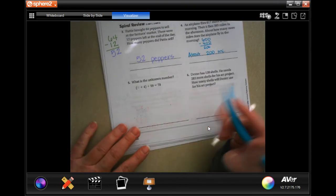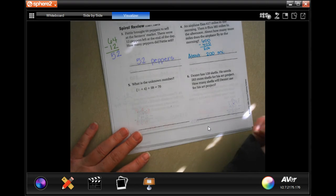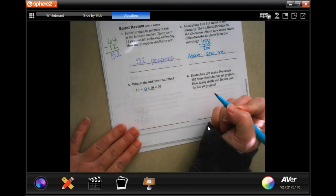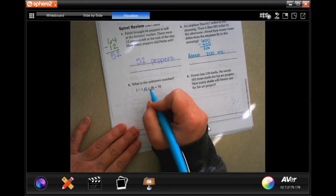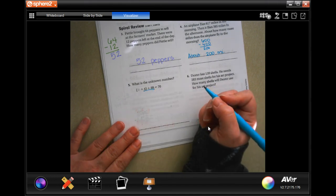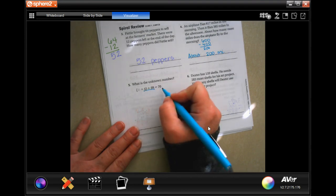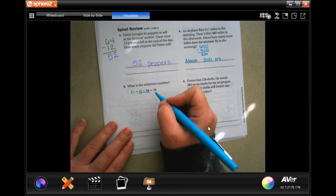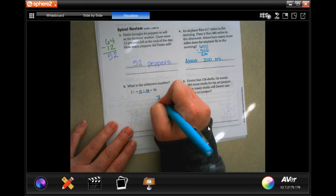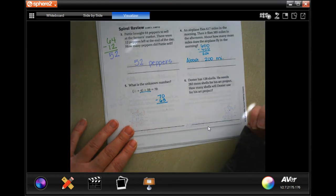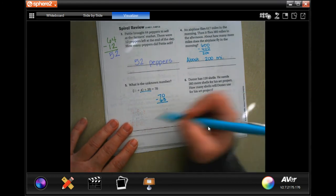All right, what is the unknown number? Well, all they're doing with these guys is adding them. So, let's go ahead and do that. So 59 plus 4 is 63. So now we need to know 63 plus what is 70. So I'm going to do 70 and I'm going to take away 63 and find out what the difference is. And then I'll have my answer.